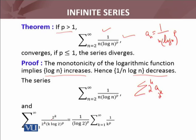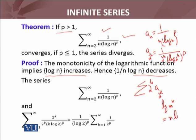I will now calculate a_{2^k}. Substituting n with 2^k, we get 1 over 2^k times log(2^k) all raised to power p. Using the logarithm property log(m^n) = n·log(m), this becomes 1 over 2^k times (k·log 2)^p, which simplifies to 1 over 2^k times k^p times (log 2)^p.